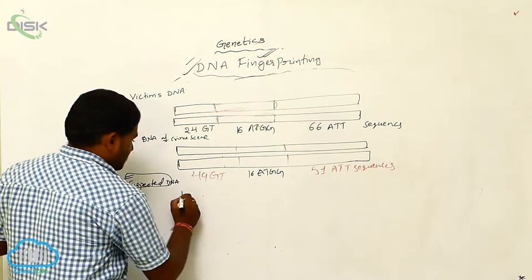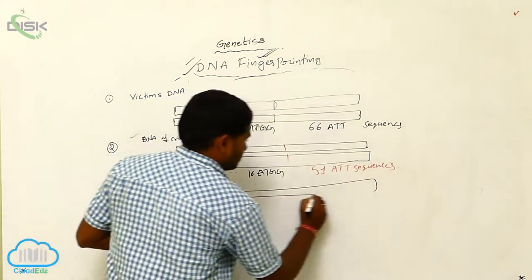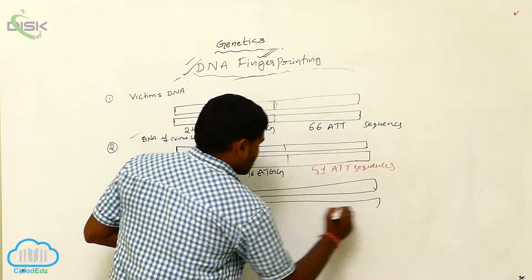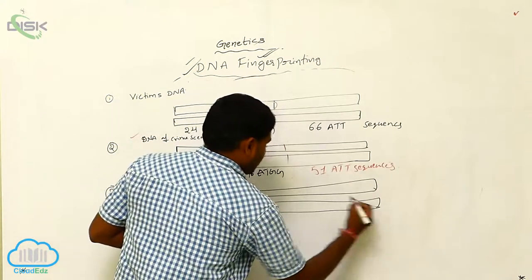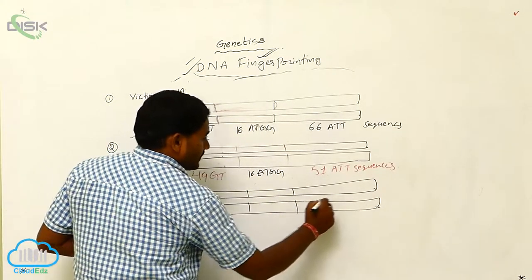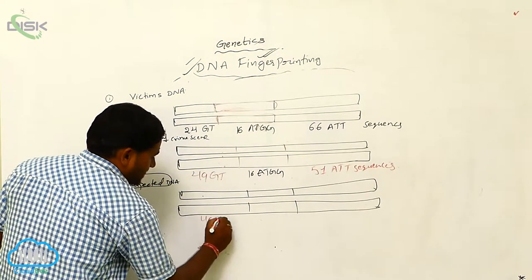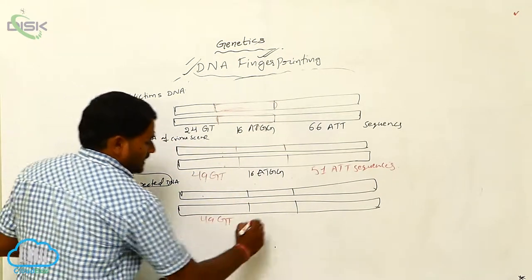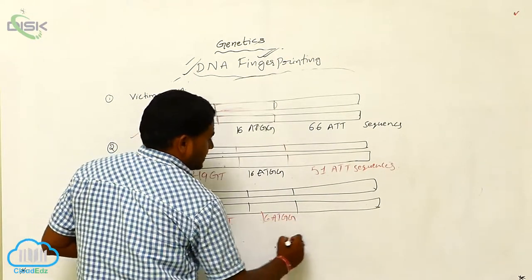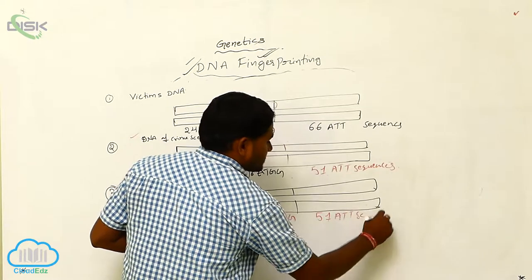If you take the suspected DNA, the same number of 49 GT sequences are here, the same number of 16 ATGG sequences are here, and the same number of 51 ATT sequences are here.